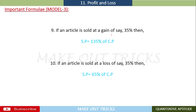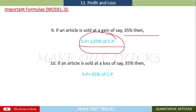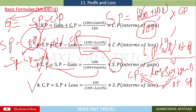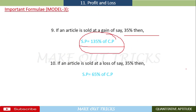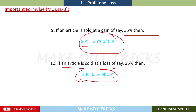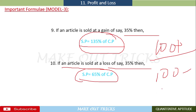Formula 3: If an article is sold at a gain of 35%, then selling price = 135% of cost price. If sold at a loss of 35%, then selling price = 65% of cost price. When a gain is given, add it to 100; when a loss is given, subtract it from 100 — 100 is always the base value.